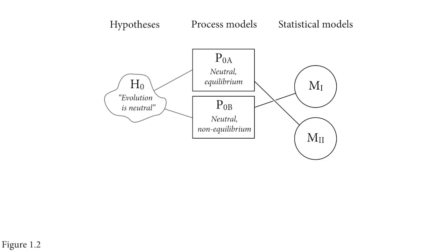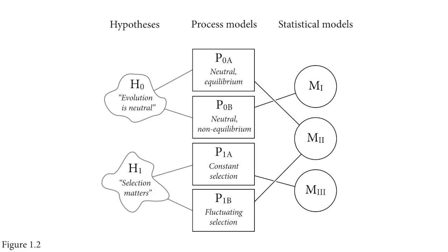I have one example: a process model of neutral meaning there's no selection, equilibrium meaning the population size stays the same. From this process model you can construct one or more statistical models, like M2 here. The reason process models and statistical models are not the same is that statistical models examine associations. You need both.